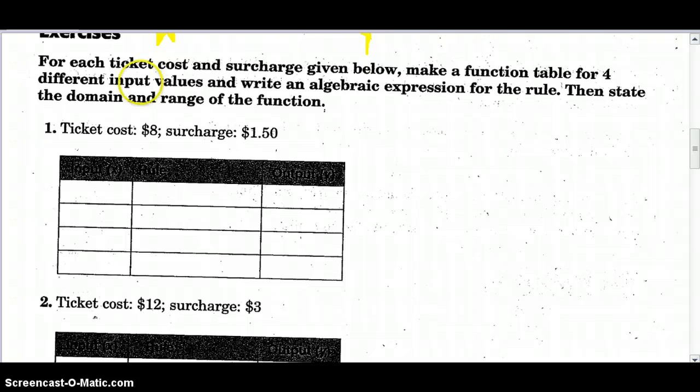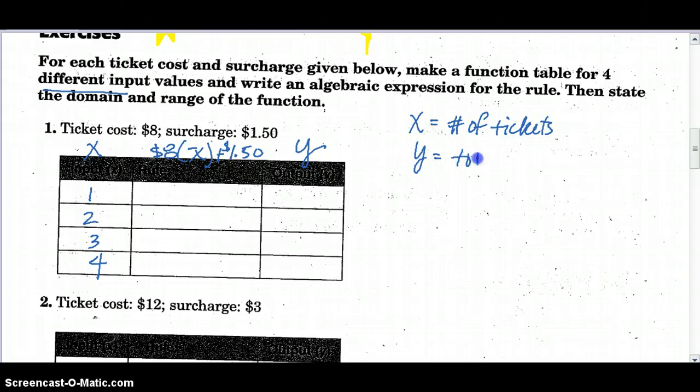Now let's see if we can do one on our own. For each ticket cost and surcharge given below, make a function table for four different inputs. Four different inputs. But I said, let's all do one, two, three, and four. So these are our x values, or our range. And for this problem, they're wanting us to use $8 per ticket. So maybe we should define our variable. x stands for number of tickets purchased. And y is going to be total cost.